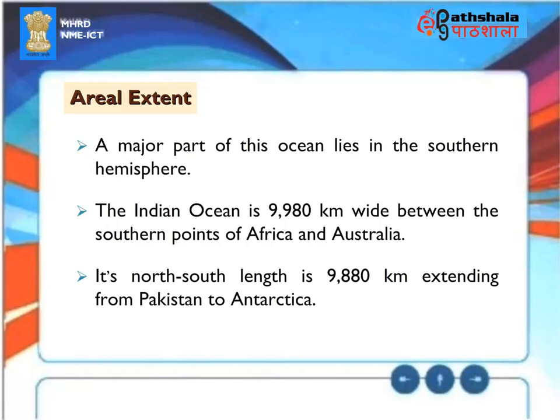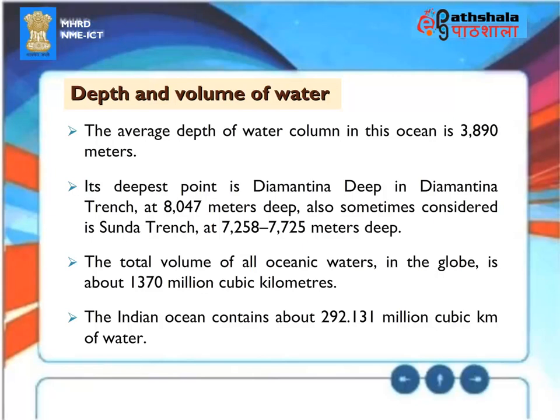A major part of the Indian Ocean lies in the southern hemisphere. It is 9,980 kilometers wide between the southern points of Africa and Australia, and its north-south length is 9,880 kilometers, extending from Pakistan to Antarctica. The average depth of the water column is 3,890 meters. Its deepest point is Diamantina Deep in the Diamantina Trench, at 8,047 meters. The Sunda Trench, at 7,258 to 7,725 meters, is also sometimes considered. The Indian Ocean contains about 292.131 million cubic kilometers of water.